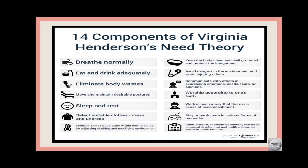Ek normal individual ko khud se khana khana chahiye aur jo khana hai usse achi tarah se digest bhi ho raha ho, aur woh drink bhi khud se kar raha ho — paani, doodh, aur other juices woh normally apne aap le raha ho. Usko koi nasogastric tube wagaira ki zarurat nahi — woh normally apna kha-pi raha ho. Need number 3 hai: eliminate body wastes.